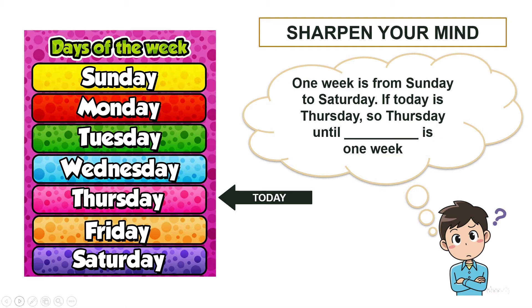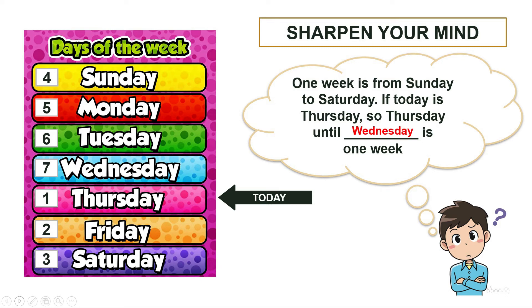Time's up! I know you got it right. Let's get the answer. Today is Thursday — it's the first day. The second day will be Friday, the third day Saturday, the fourth day Sunday, the fifth day Monday, the sixth day Tuesday, and the seventh day Wednesday. There are seven days in a week, so from Thursday until Wednesday is one week. Good try, pupils!